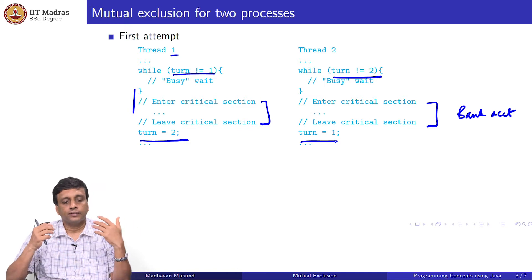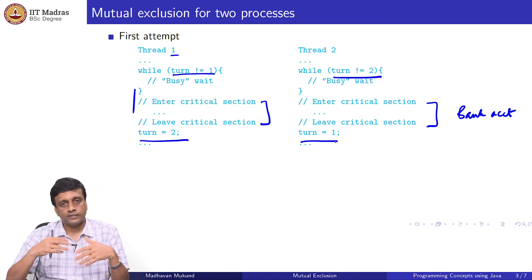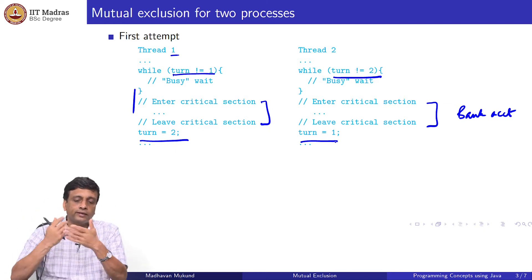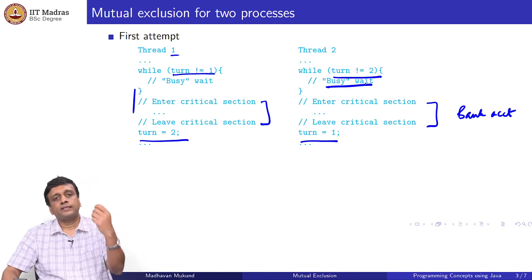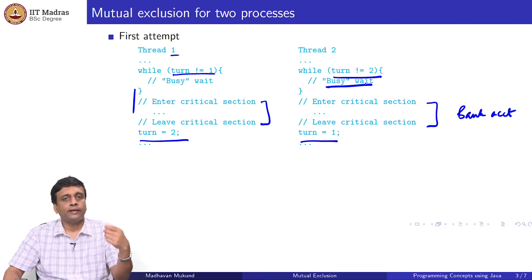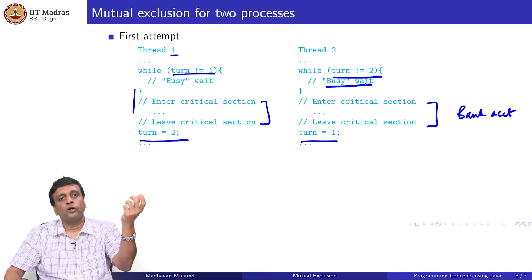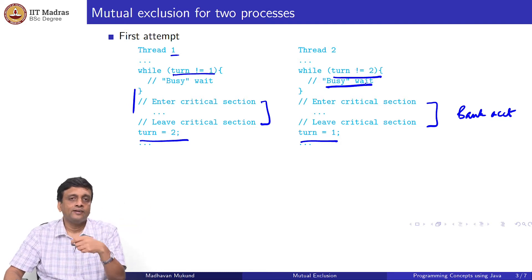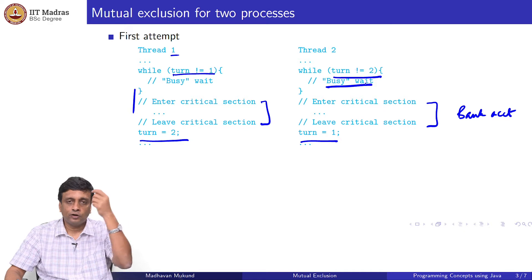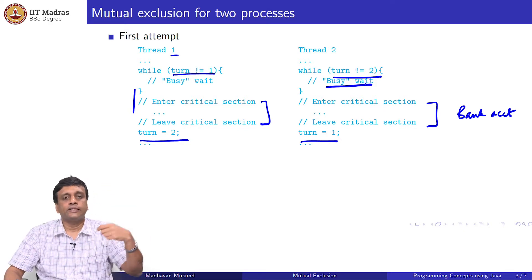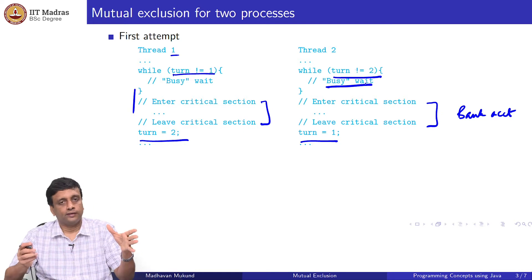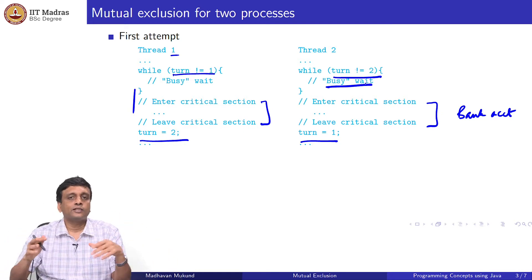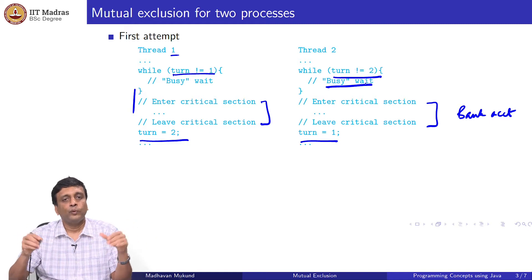Thread one sees turn equal to one, it executes and sets turn equal to two. Thread two, which is waiting, does what we call a busy wait — basically this thread is executing this condition repeatedly without making any progress. It is not being told that the value is now useful for it; rather, it is repeatedly checking. This is how we envisioned the browser which is downloading: the download thread periodically checks whether terminate has been set to true. Here, the thread is doing nothing — it is busy waiting, busy doing nothing, waiting for some good condition to happen.